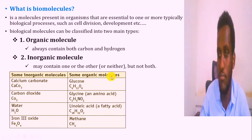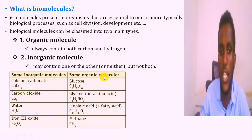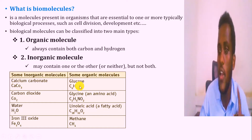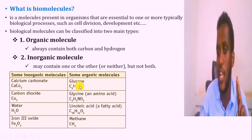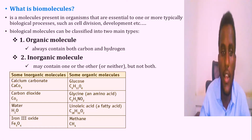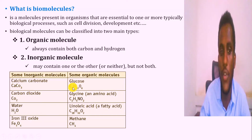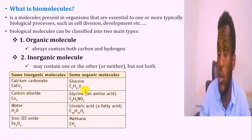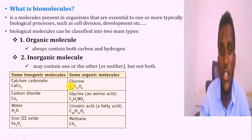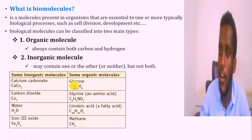Organic compounds or organic molecules contain carbon and hydrogen simultaneously. For example, glucose has the chemical formula C6H12O6, which contains both carbon and hydrogen.